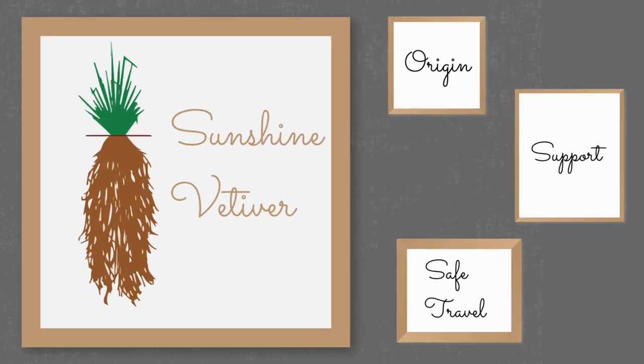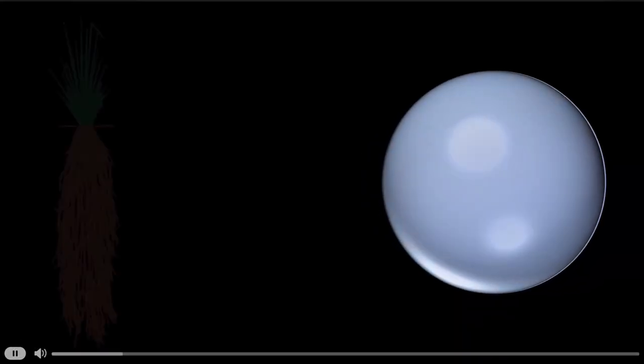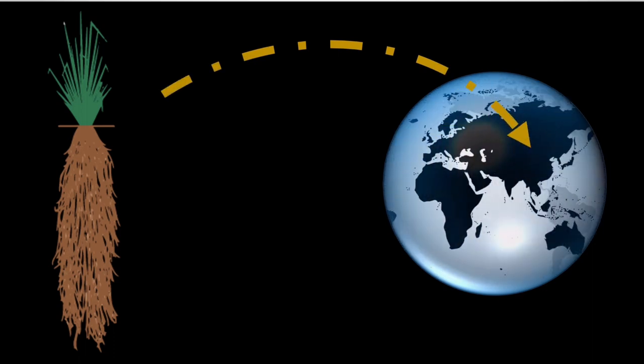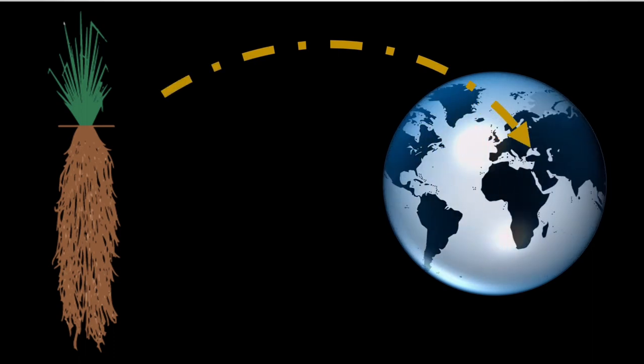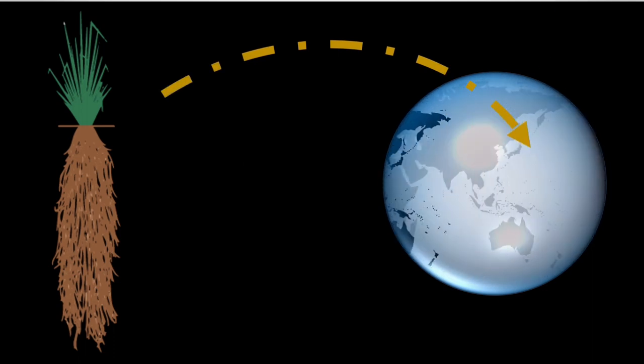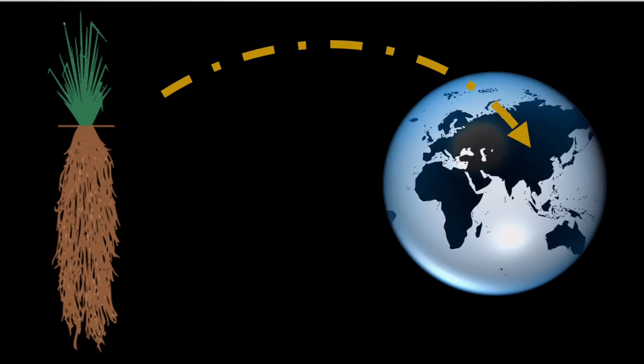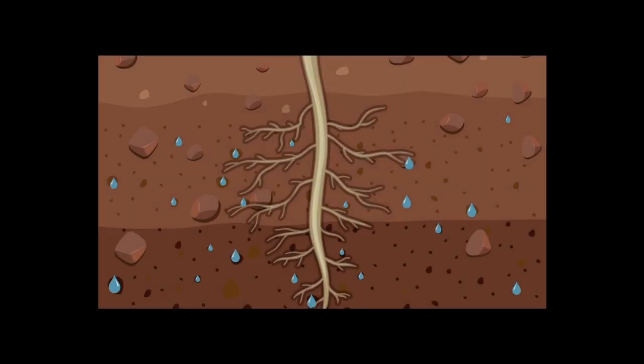Sunshine vetiver has long roots that can extend 10 to 12 feet below ground surface. Sunshine vetiver was born and raised in Southeast Asia where the sun shines and they get a lot of rain because of the tropical climate. Ironically, it's been in the US for over a hundred years.